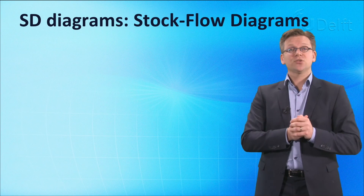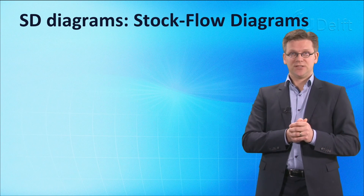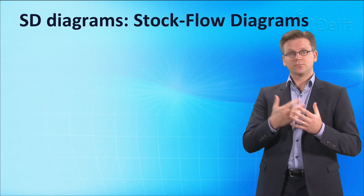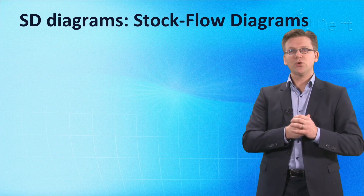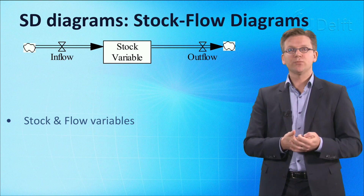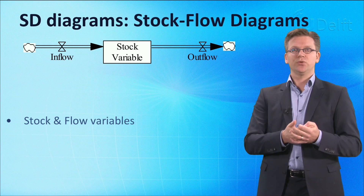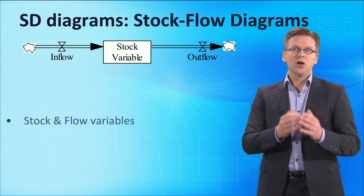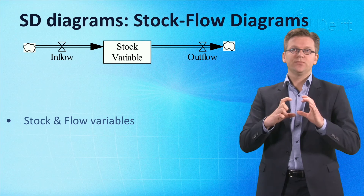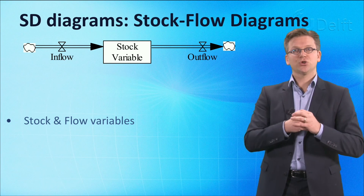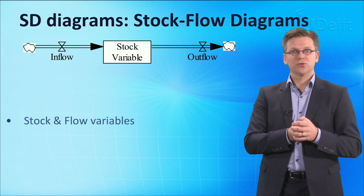Two types of diagrams are often used in system dynamics. The first type, stock-flow diagrams, are mainly used to build simulation models. Stock-flow diagrams focus, as suggested by the name, on stocks and flows, which are two types of variables.